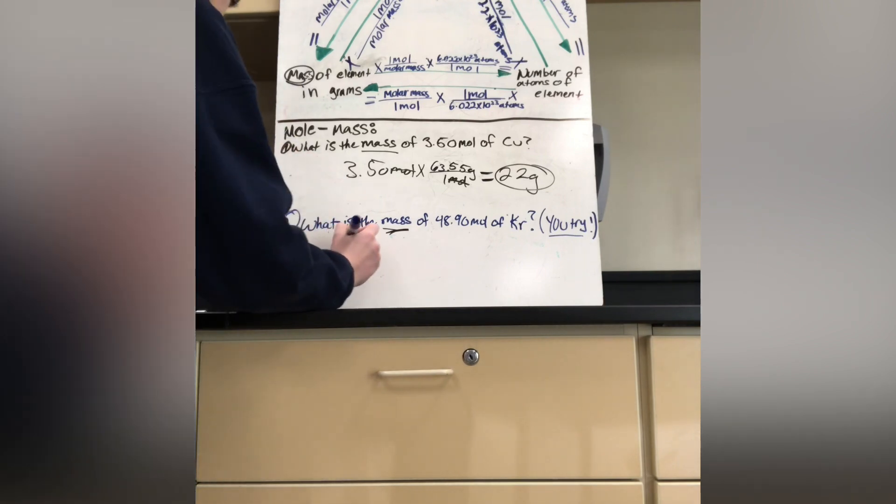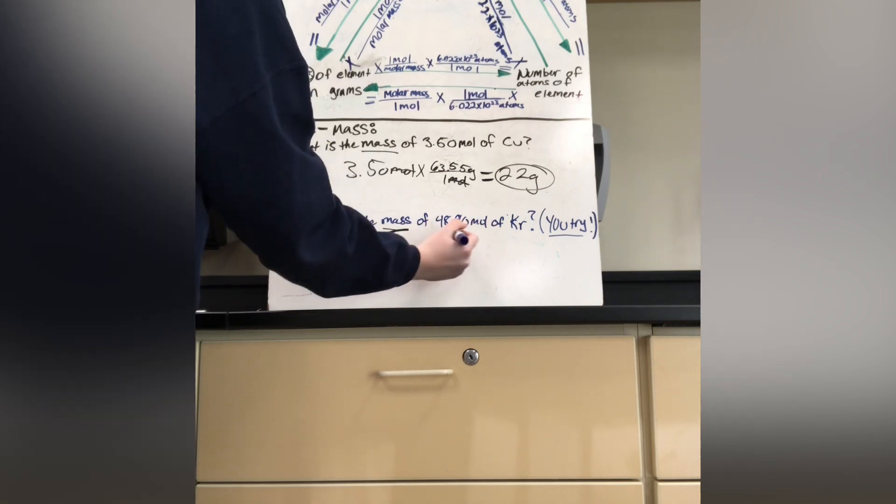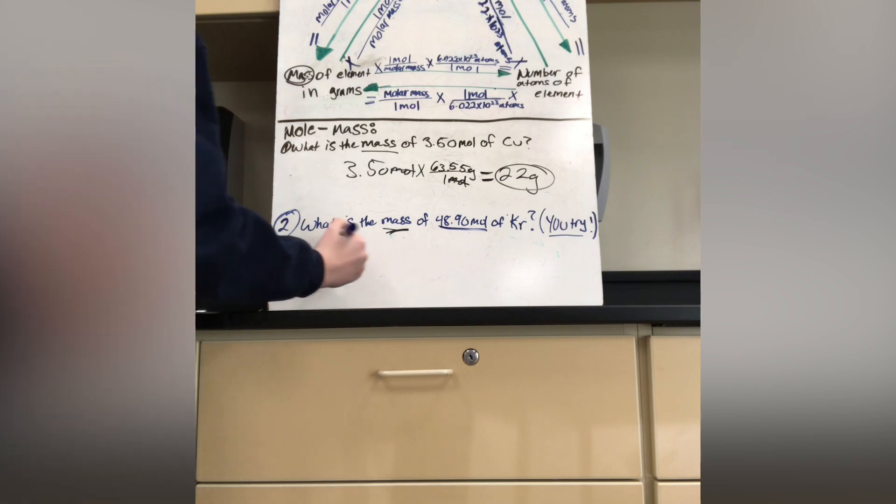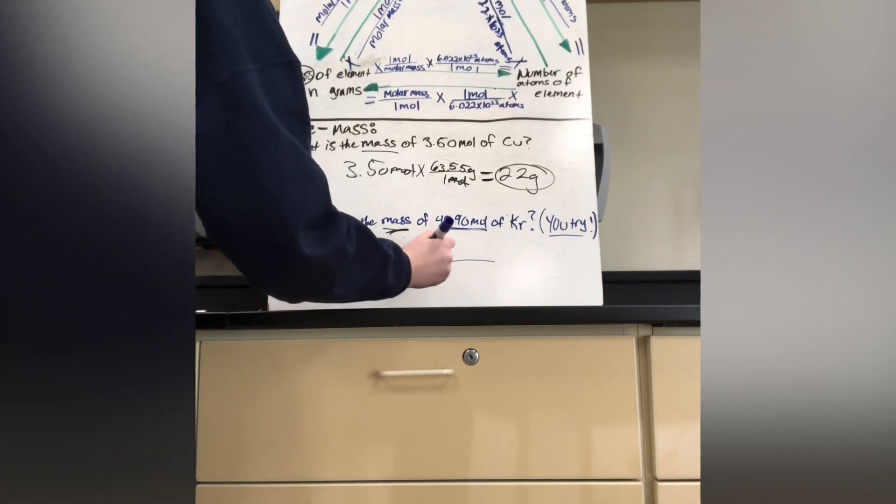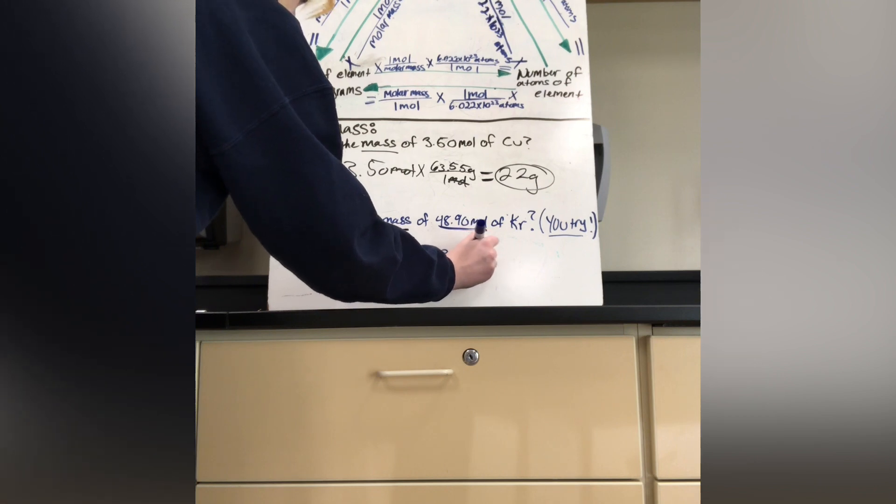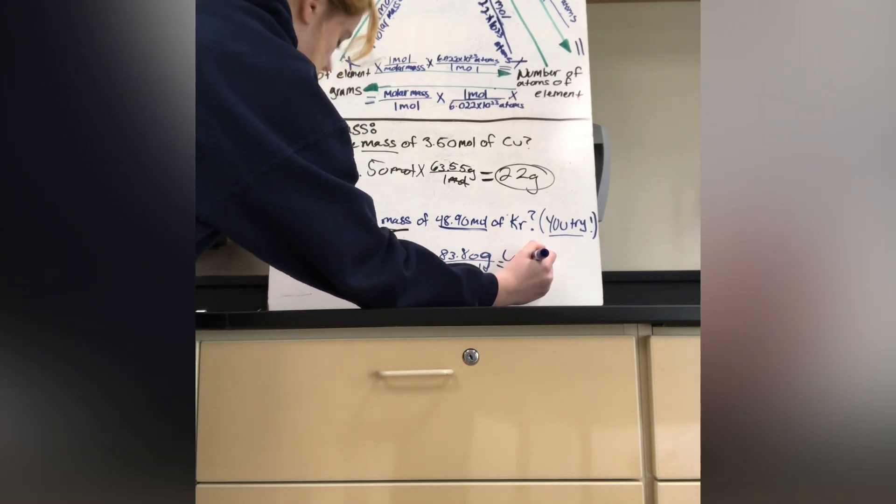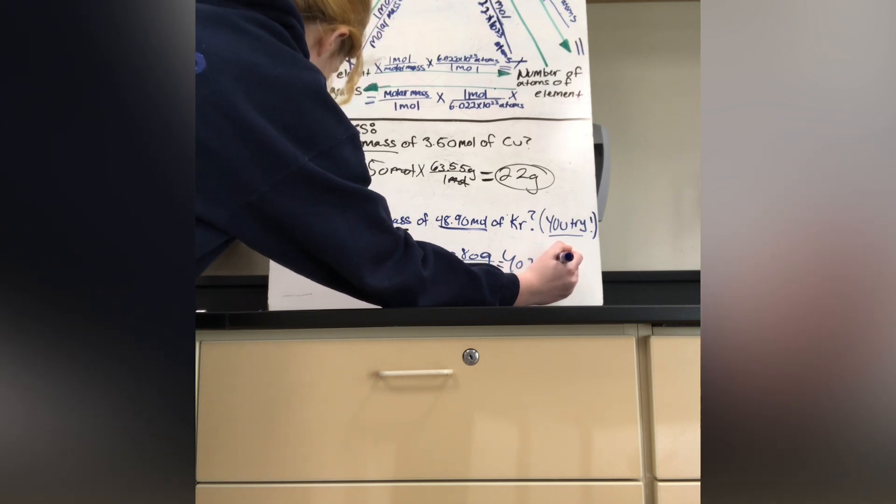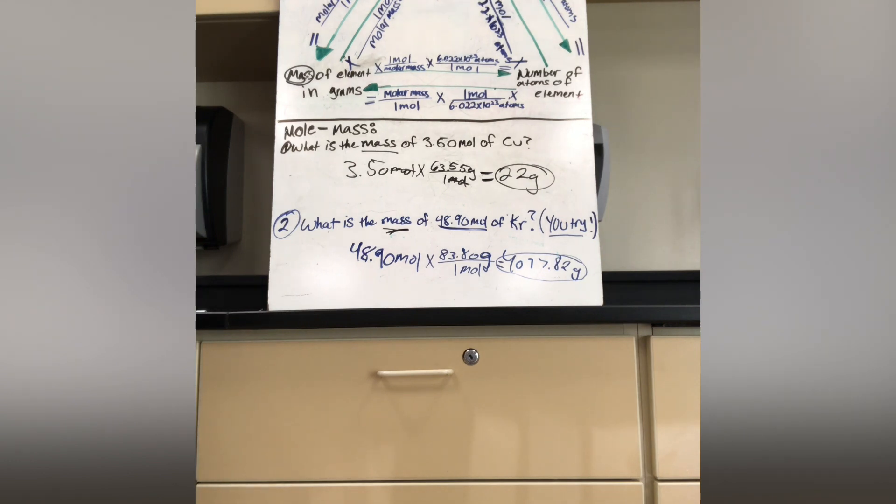All right. So your answer should be, since we're finding the mass, we're going down here, finding the amount. We have the amount of moles right here. And we're going down, finding the mass. So what would be 48.90 mol times the molar mass of the element, excuse me. And that would be 83.80 grams over 1 mol. And that should be 4,097.82 grams. Okay? So that should be your answer.